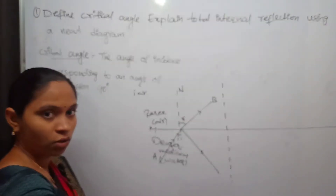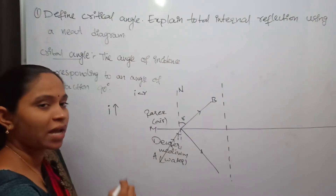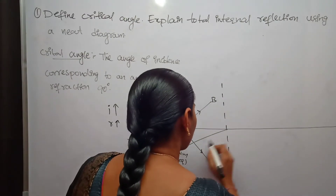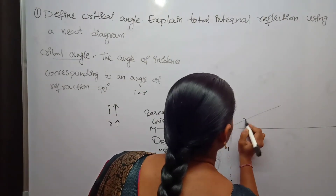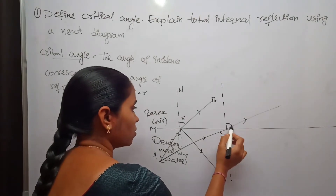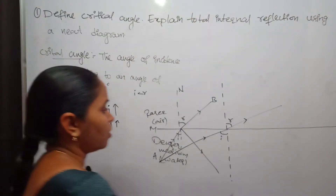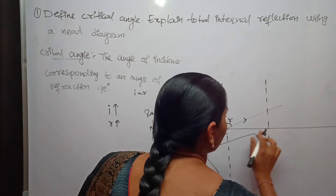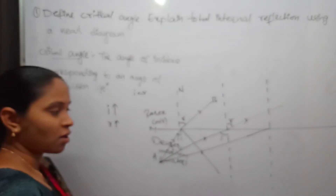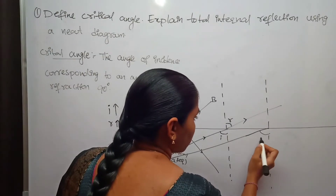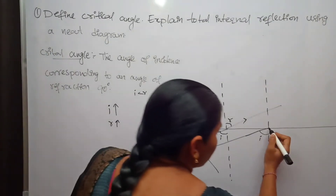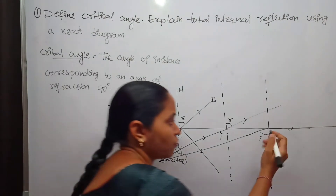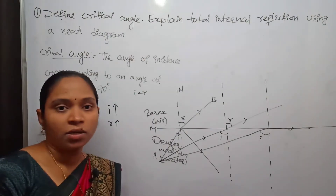Now if you keep on increasing the angle of incidence, the angle of refraction also increases. At some particular angle of incidence, the refracted ray grazes the interface between the two mediums, meaning the angle of refraction becomes equal to 90 degrees.